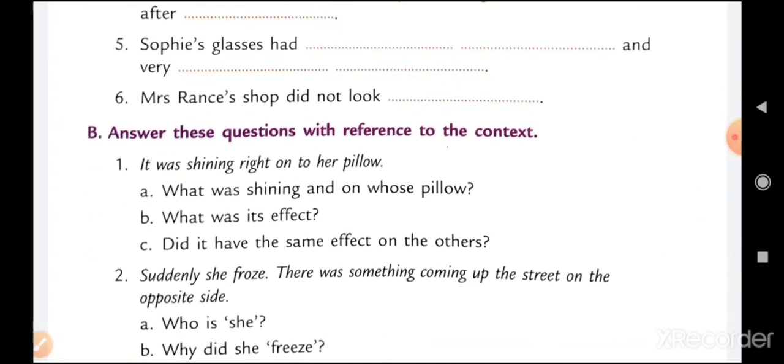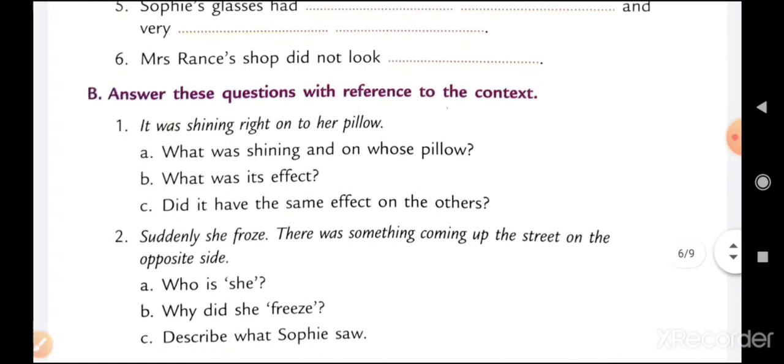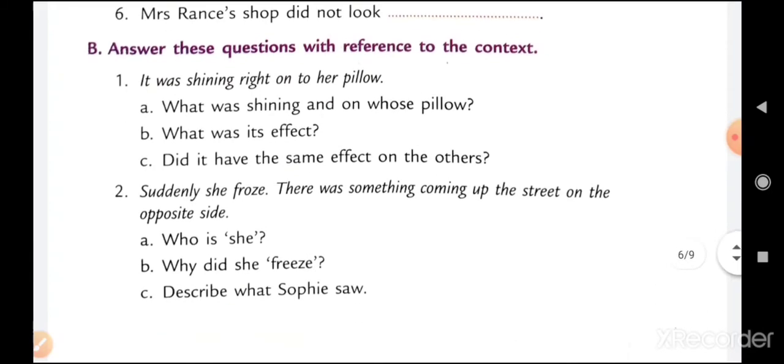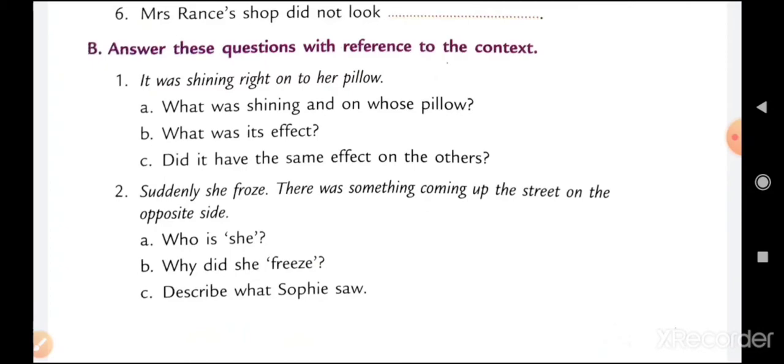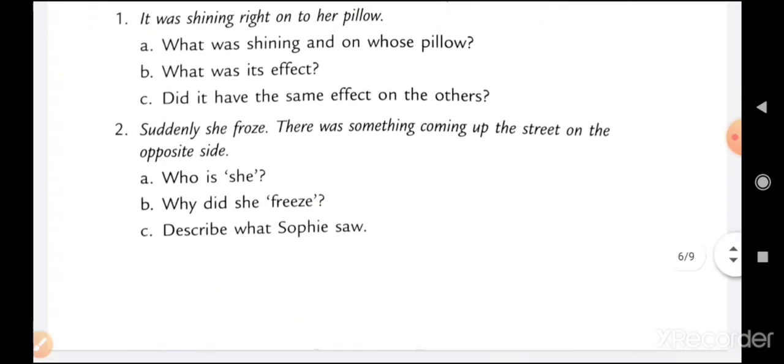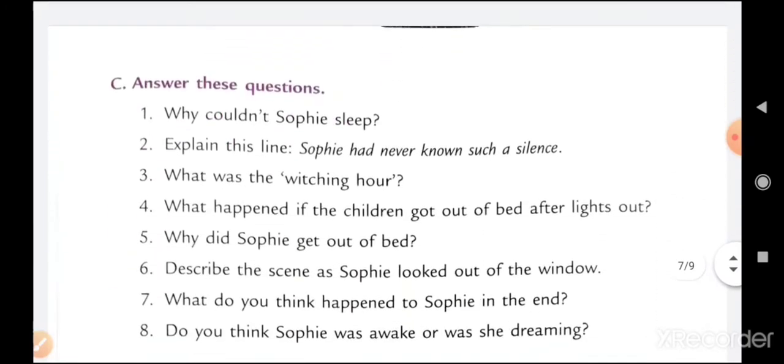Carefully answer these questions with reference to the context. It was shining right on to her pillow. What was shining and on whose pillow? What was its effect? Did it have the same effect on the others? Suddenly she froze. There was something coming up the street on the opposite side. Who is she? Why did she freeze? Describe what Sophie saw.